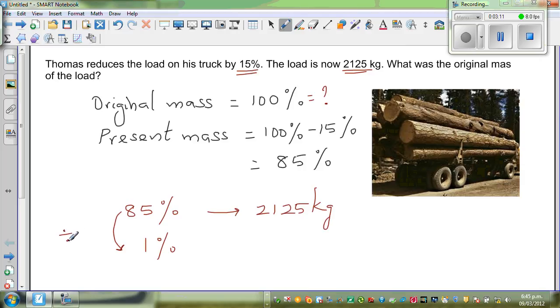So I am asking the question: 85 divided by what gives you 1? Well, that's pretty easy. 85 divided by 85 gives you 1. So if you are dividing from here to here, to maintain the same ratio, you have to divide 2125 by 85.